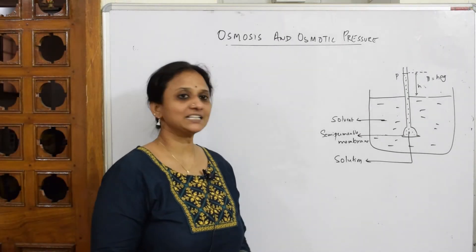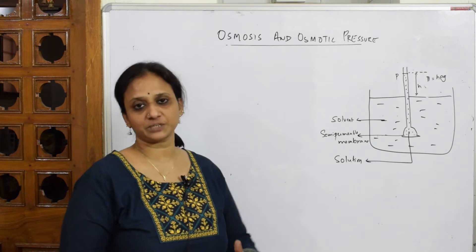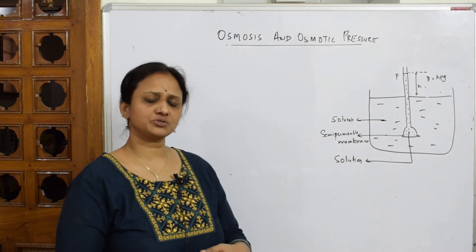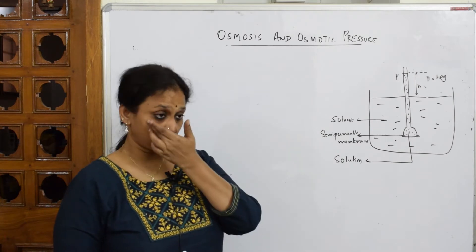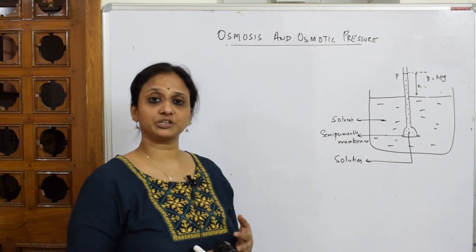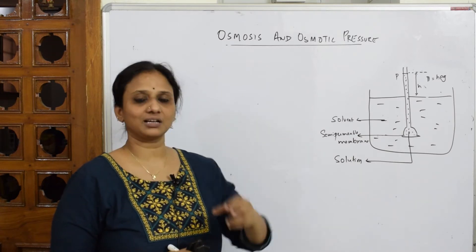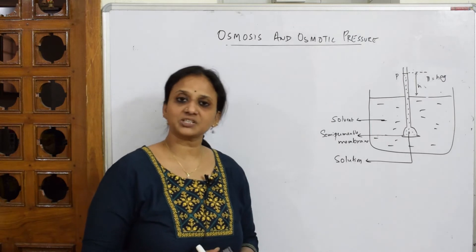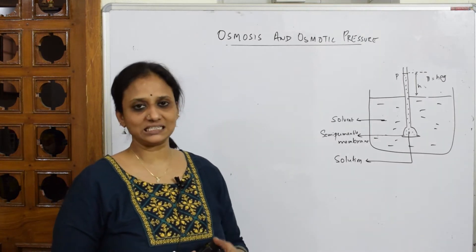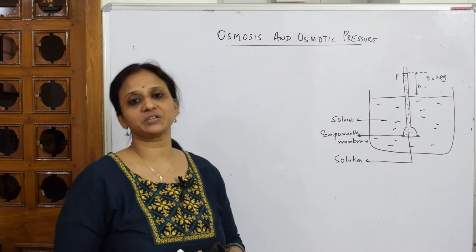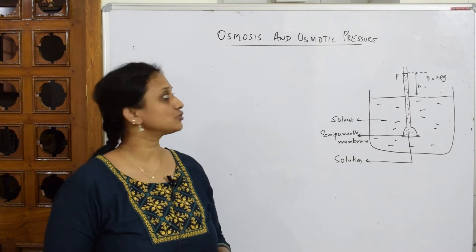Let us come back and discuss the last colligative property, that is osmosis and osmotic pressure. Till now we have been doing so many numericals in vapor pressure, elevation of boiling point, and freezing point. I have done one numerical for each model so that any sort of concept asked gets cleared. Now let us come back and discuss osmosis and osmotic pressure.